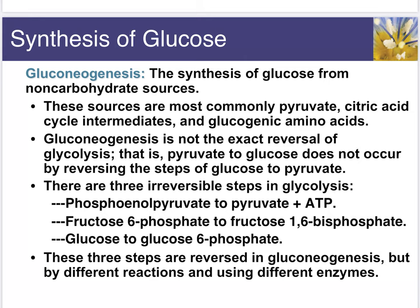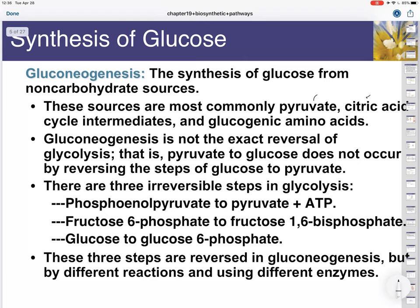How do we make glucose? We have a process called gluconeogenesis, and we can make it from a few different sources. The common ones are pyruvate, citric acid cycle intermediates, and also some amino acids. The only thing we can't make sugar from is lipids — we have no way of taking acetyl-CoA, which is the result of lipid breakdown, and turning that into sugar or glucose.